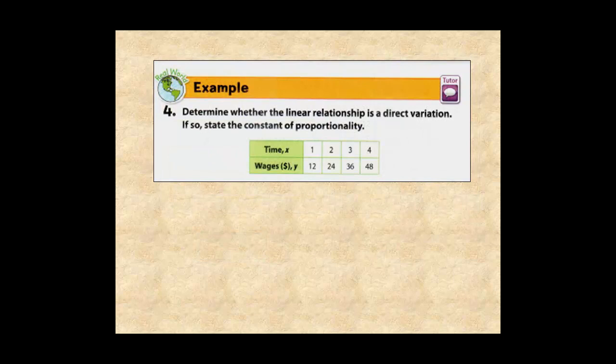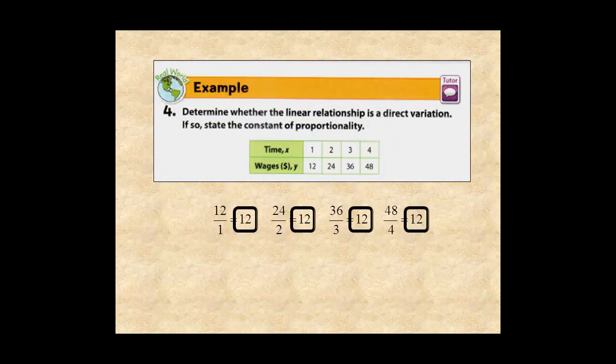For example 4, the ratio of wages over time is a constant, 12. So, the relationship is a direct variation. The constant of proportionality equals 12, and the equation is y equals 12x.